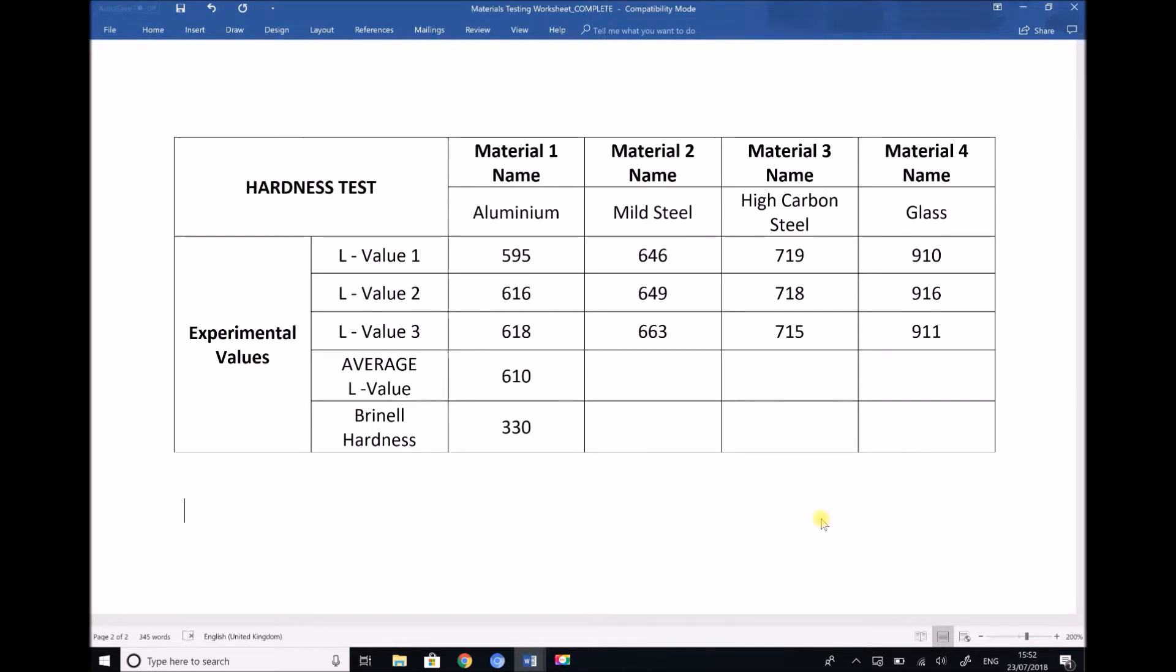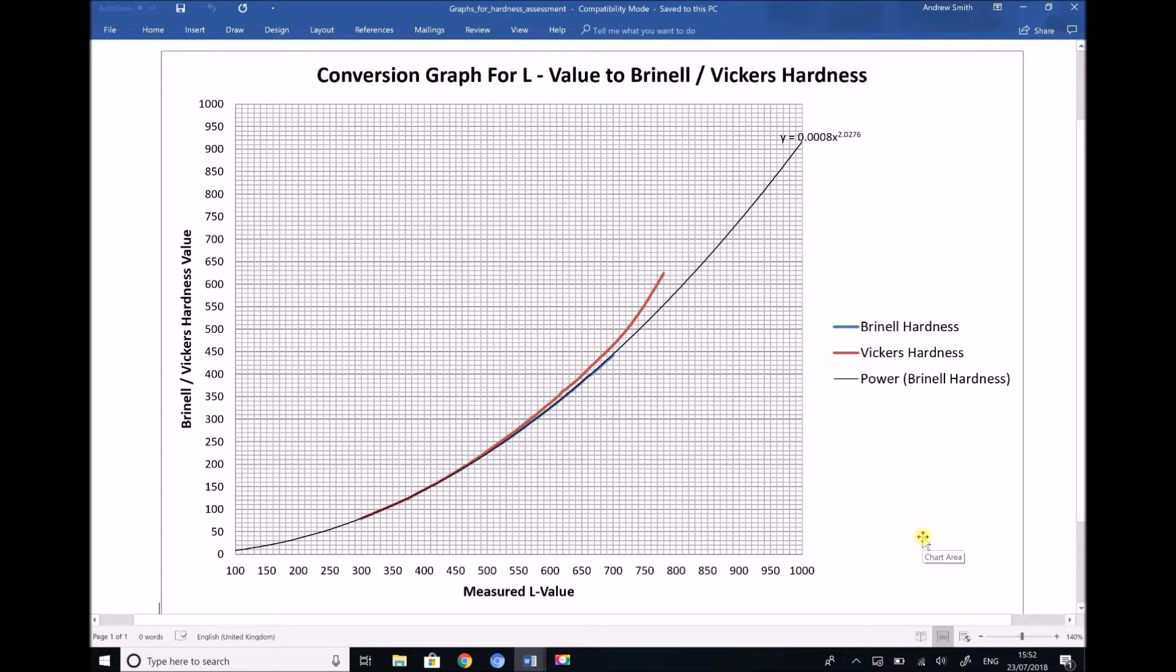Now that I have the average L value for aluminium, I can now go to my conversion graph in order to determine the corresponding Brinell hardness. And the conversion graph I'm going to show you was provided with the hardness tester.